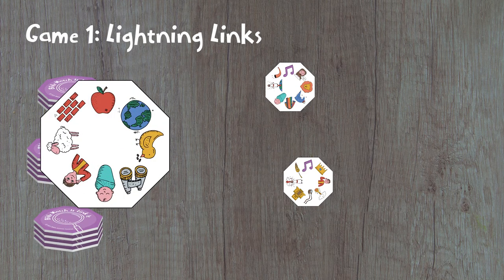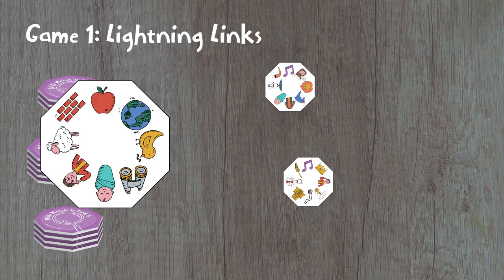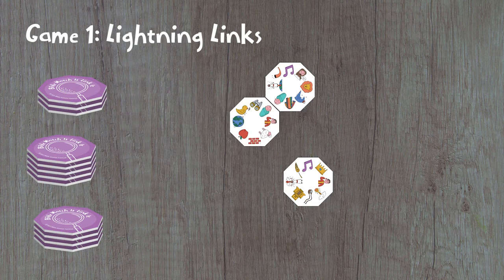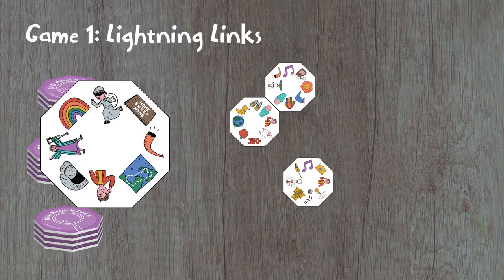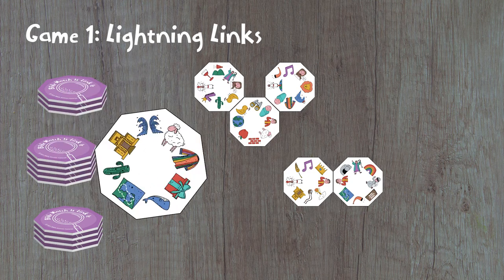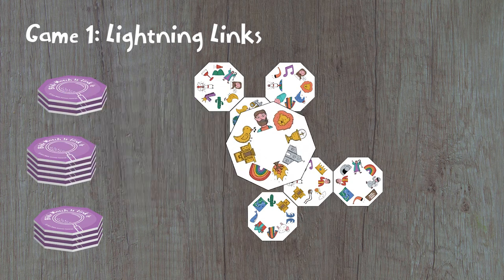Players take turns to flip over the top tile from any stack. Any player who can link this new tile to their own must quickly call out the matching image. The first player to do so wins the tile and gets to link it to their own tiles. Play carries on until all 57 tiles have been linked or when links are no longer possible. The player with the most linked tiles wins the game.